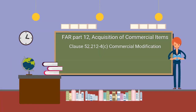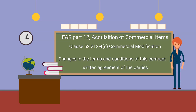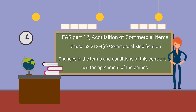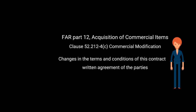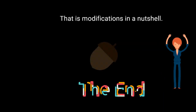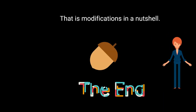If your contract is a commercial purchase under FAR Part 12, you will include Clause 52.212-4C, Commercial Modification. According to the clause, changes to the terms and conditions of this contract may be made only by written agreement of the parties, meaning the contractor and the government. And that is modifications in a nutshell.